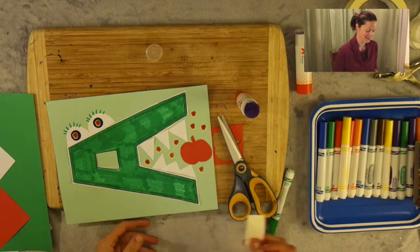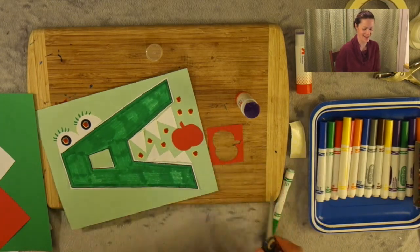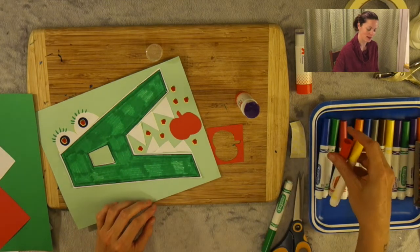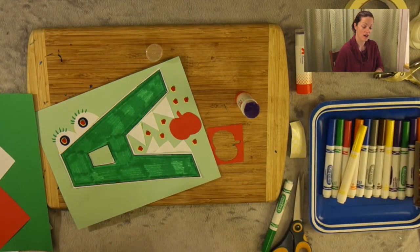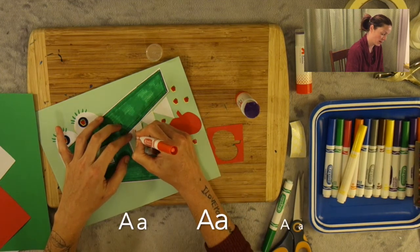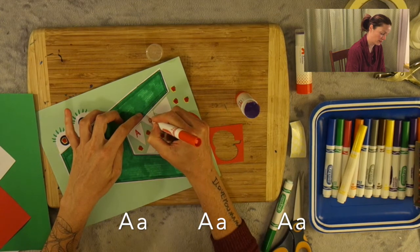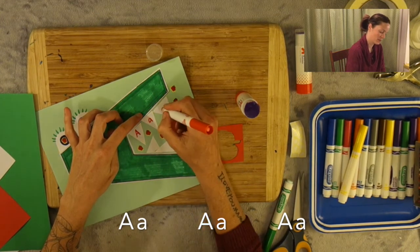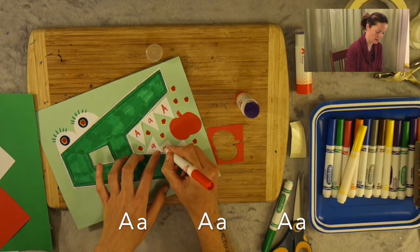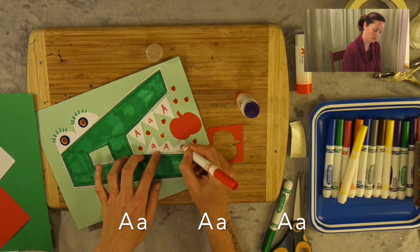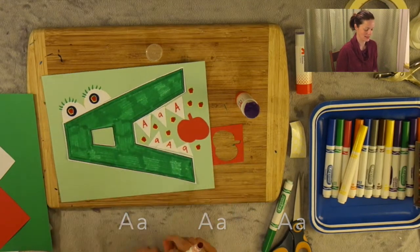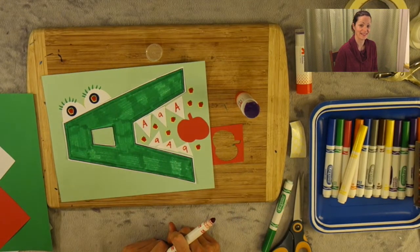The last thing that I want to do with you is to take my red marker and draw A's on his teeth. So I'm going to draw a capital A and a lowercase a. I'm going to draw a capital A, a lowercase a, another capital, and another lowercase. And that is your alligator eating apples.